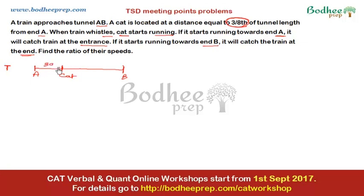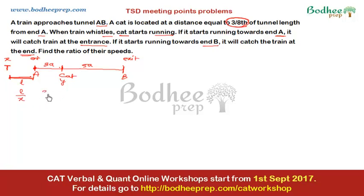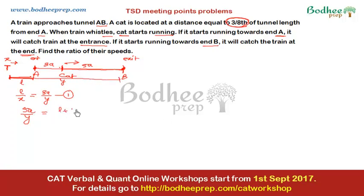Let the cat's position C divide the tunnel such that AC = 3a and CB = 5a, making the total tunnel 8a. Suppose the train is at distance L from the entrance when it whistles. Let train speed = X and cat speed = Y. For the first scenario, when both reach the entrance simultaneously: L/X = 3a/Y — call this equation 1. For the second scenario, the cat covers 5a while the train covers L + 8a: 5a/Y = (L + 8a)/X.